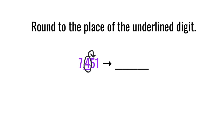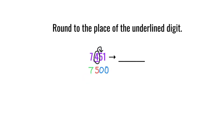Since the digit next door is a five, it has the power to bump the circled digit up one, so that four becomes a five. Everything after the circled digit becomes a zero, so the five becomes a zero and the one becomes a zero, and everything before the circled digit stays the same always. So 7,451 when rounded to the nearest hundred becomes 7,500.